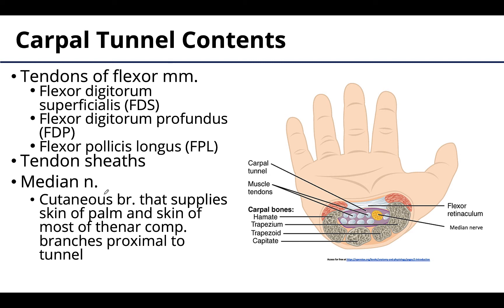The bulk of the tunnel's contents are the long flexor tendons, whose muscle bellies are located in the anterior compartment of the forearm. Specifically, we have the flexor digitorum superficialis tendons, the flexor digitorum profundus tendons, and the flexor pollicis longus tendon, which travels through the tunnel somewhat on its own but still within it. The tendons are surrounded importantly by tendon sheaths — elongated bursa-like structures that surround the tendons — and these sheaths take up almost all the space within the carpal tunnel.